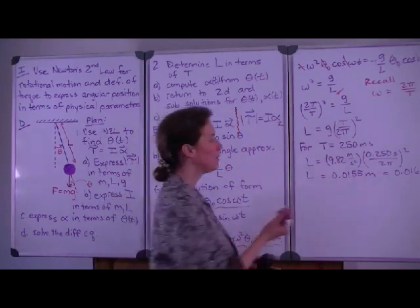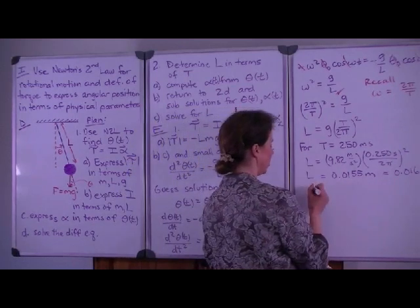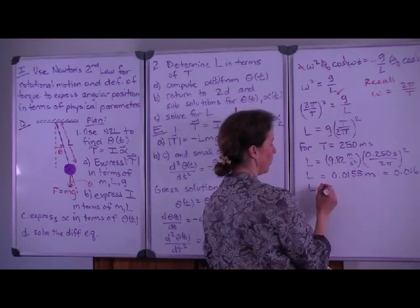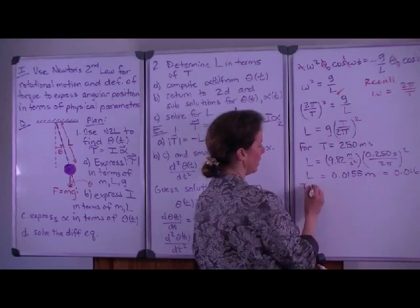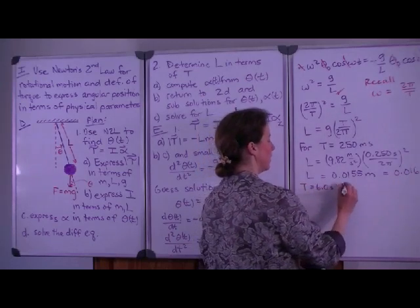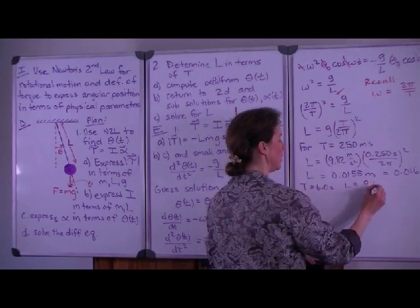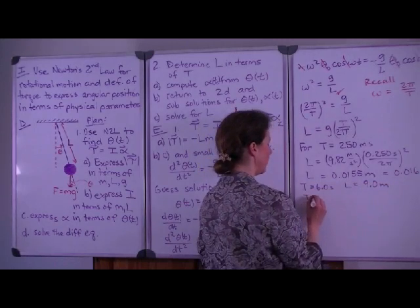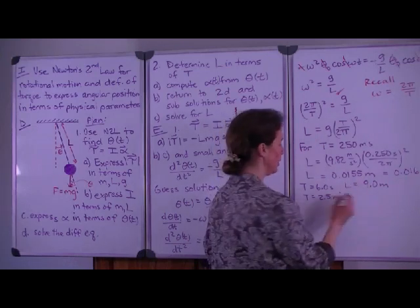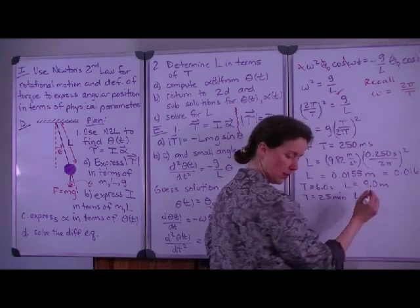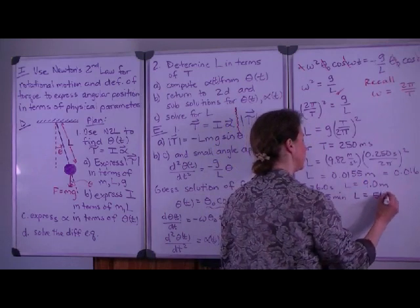I will leave the next two to you to compute. I'll just tell you that I get when the period is 6 seconds, the length ends up being 9 meters, and when the period is 2.5 minutes, which you must convert to seconds in the substitution, I get a length of 5,600 meters.